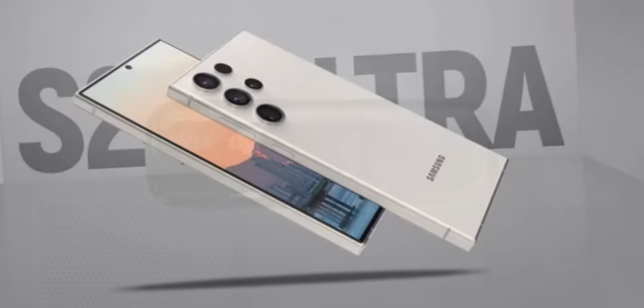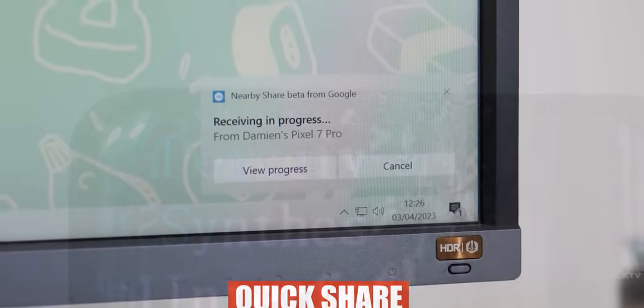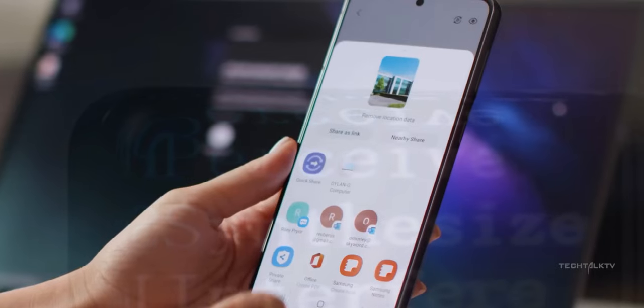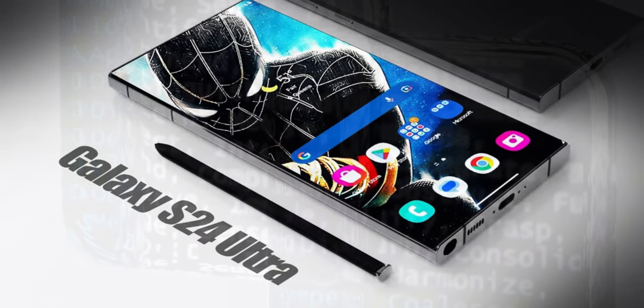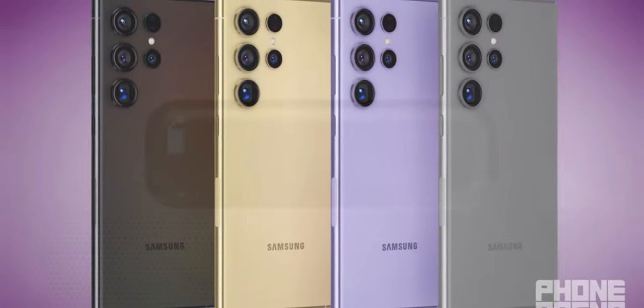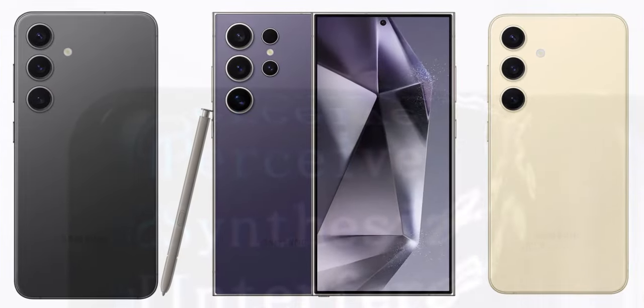The Galaxy S24 Ultra will be available in three configurations: 12GB/256GB, 12GB/512GB, and 12GB/1TB, priced at €1,449, €1,569, and €1,809, respectively.